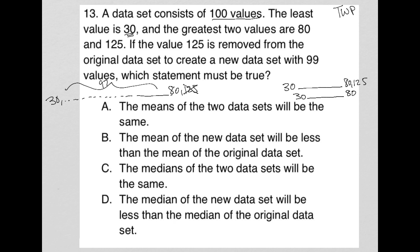So choice A, the means of the two data sets will be the same. No, I don't think so, right? Like this 125 will have some significance in finding the mean, so it can't be the same if I remove it from the second data set.